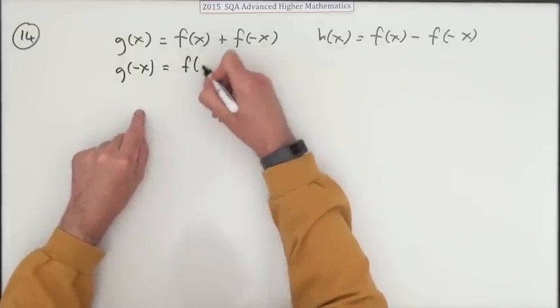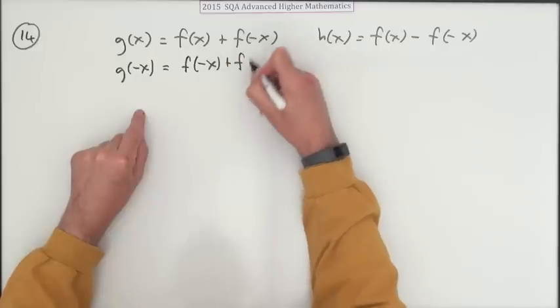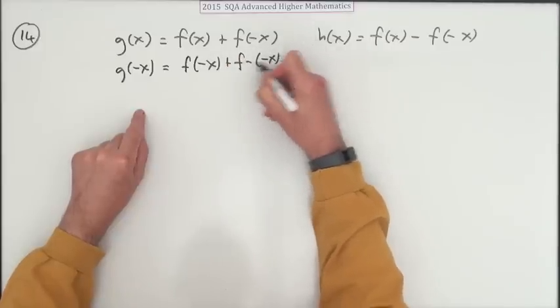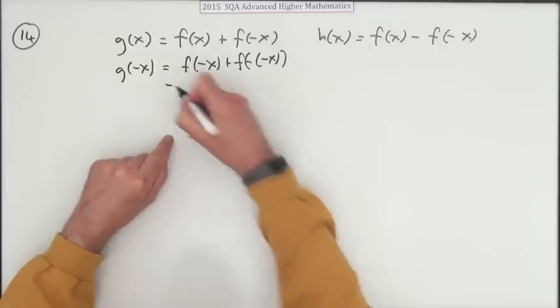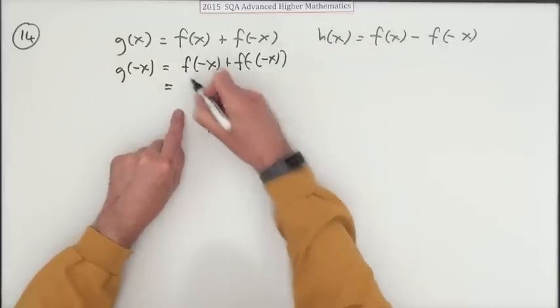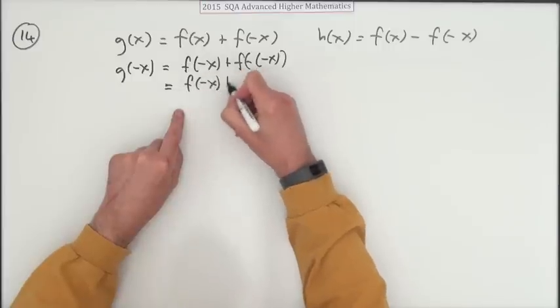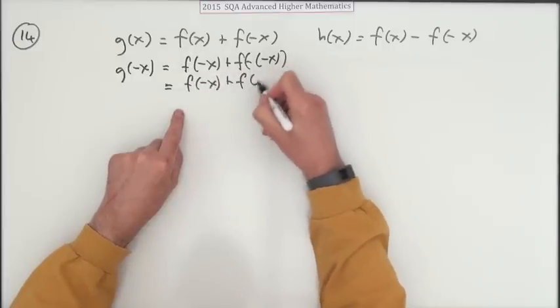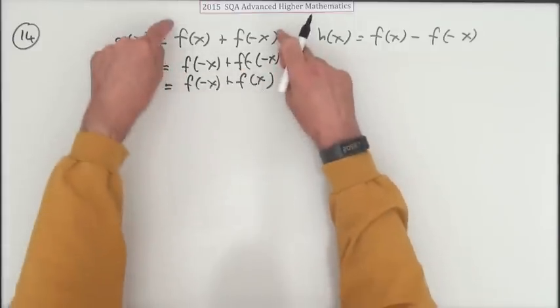Well, if you put a negative X in, that means I'll have a negative X in there, and I'll have a negative X in there. Oops, so many brackets. So that's F of negative X, and the negative of negative X is X, and that's just what you started with.